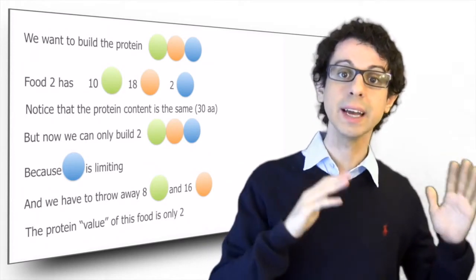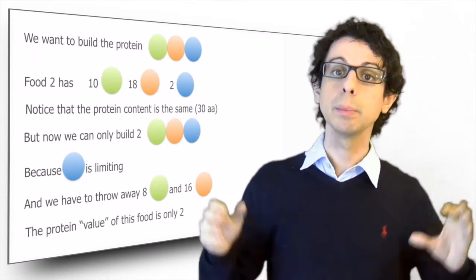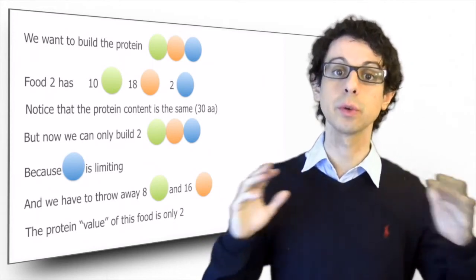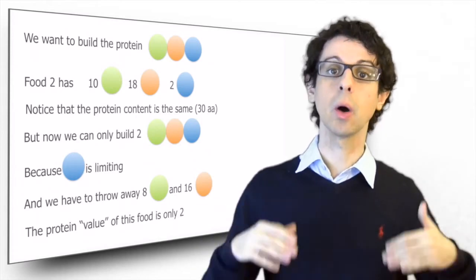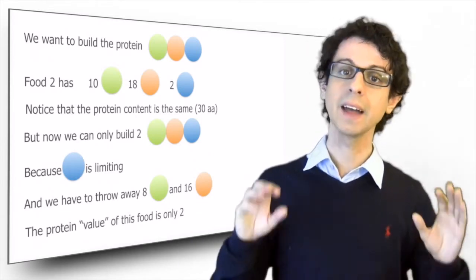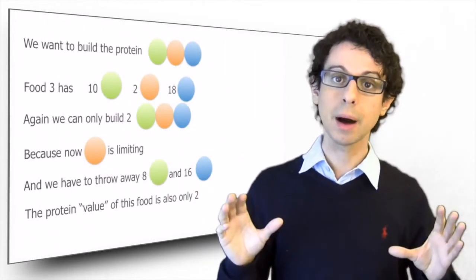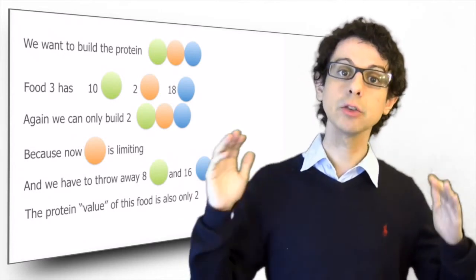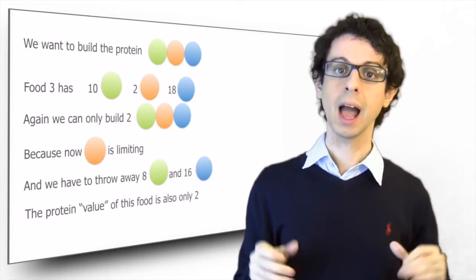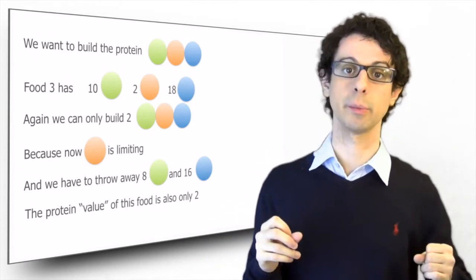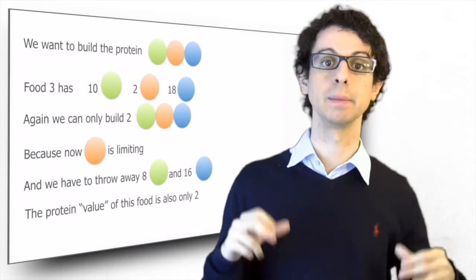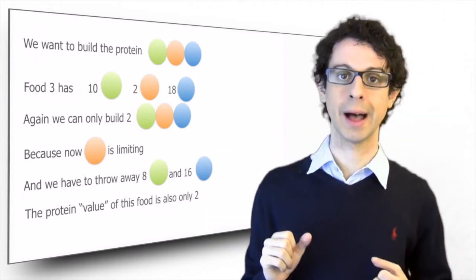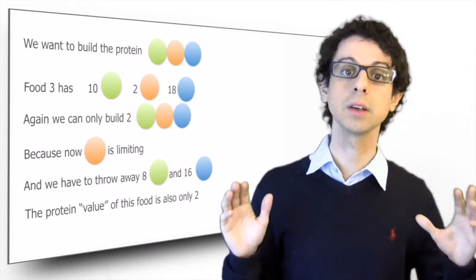On top of that, we are left with eight green and 16 orange amino acids. But because we don't have any way to store extra amino acids, we will have to throw them away by using them for energy or converting them to fat. And now let's consider food three. Again, the total amount of protein is still the same. We still have 30 amino acids. But now we have a lot of blue and only two of the orange amino acid. Again, we can only make two copies of our protein. Then this time the orange will become limiting and we will have to throw away eight green and 16 blue amino acids. The protein value of food three is also only two.